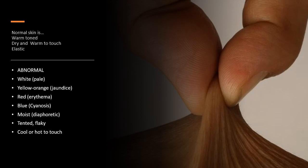Be alert for pallor, jaundice, erythema, and cyanosis. In patients with darker pigmented skin, remember to observe the oral mucosa and palate, the conjunctiva (sclera), the palms of the hands, the soles of the feet, and the nail beds for color changes.